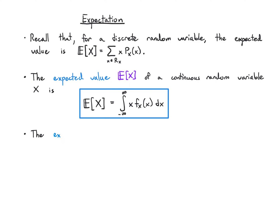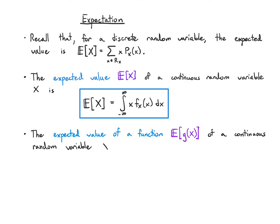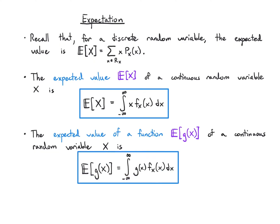We can do the same thing for a function of a continuous random variable. To take the expectation of a function, we put that function inside the integral and weight it by the pdf value. So here g is the function — maybe it's the square of x — and we plug that into this integral weighted by the pdf density and integrate from minus infinity to infinity.